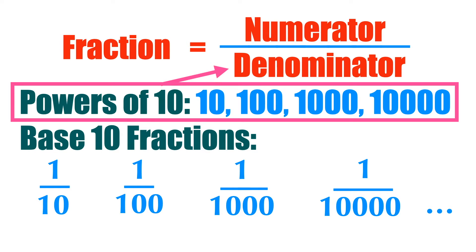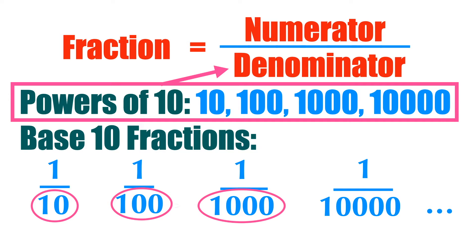For example, 1 over 10, 1 over 100, 1 over 1000, 1 over 10,000 — these have the bottom numbers as multiples of 10, like 10, 100, 1000, 10,000.